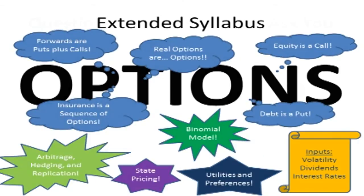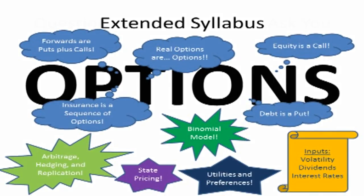It's all about options. Forwards are puts plus calls. Real options are kind of options. Everything is there to be priced. Equity is a call. Debt is a put. Insurance is a sequence of puts. The binomial model, everything comes back to options.